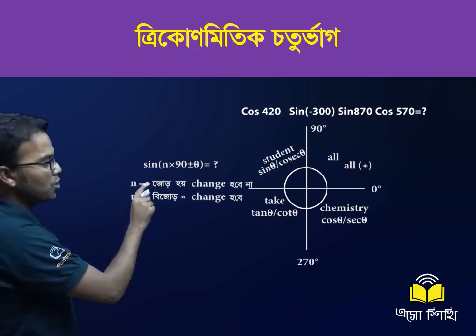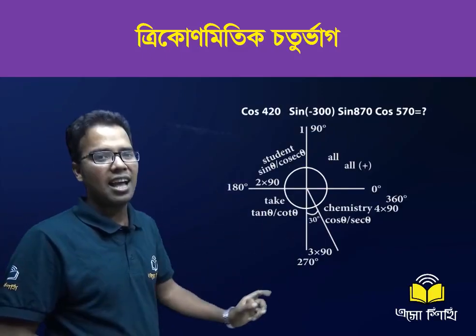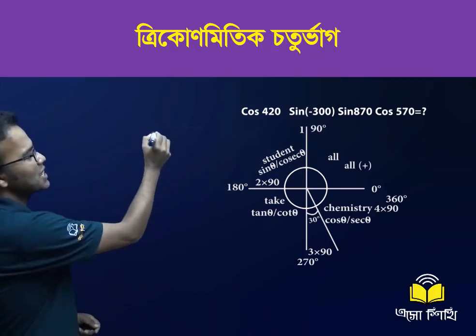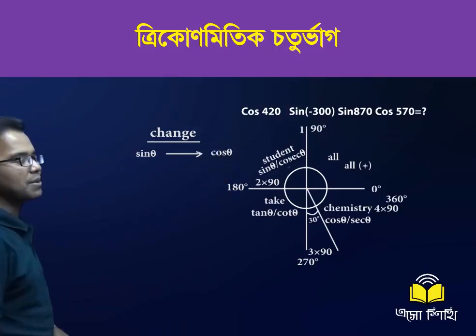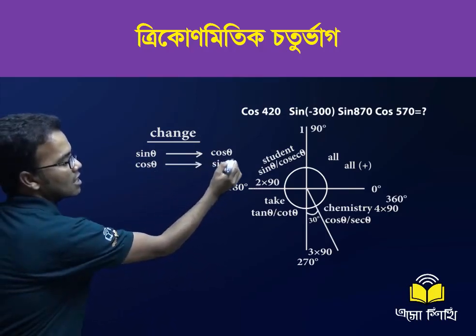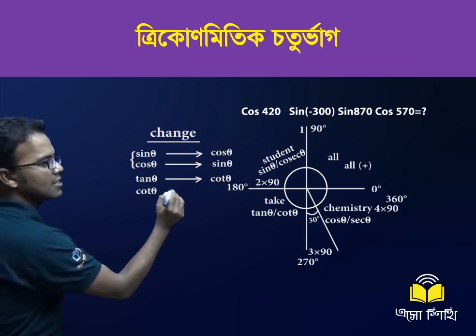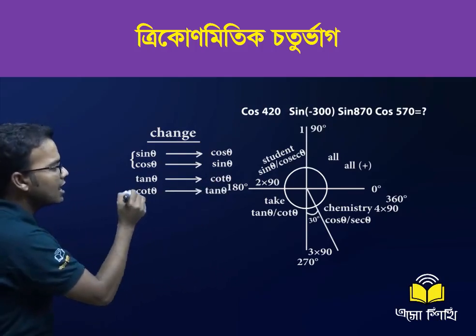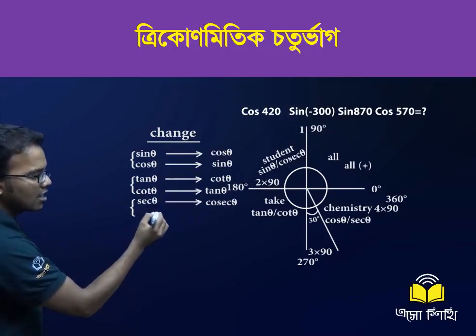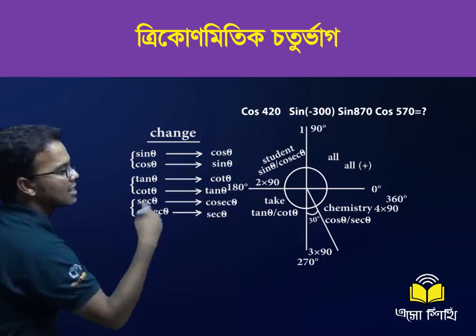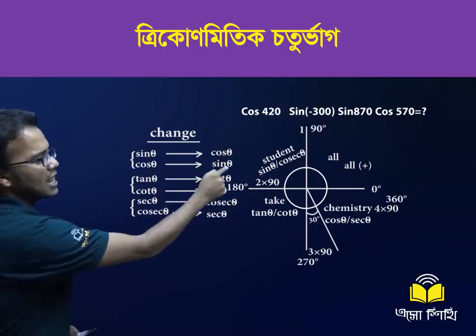This box will transmit data — whatever change will happen, it will begin to change. The changes include sin theta, cos theta, sin theta change, 10 theta change, cos theta change, and cos cos change.